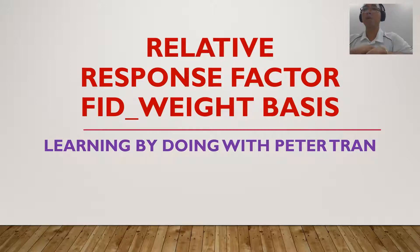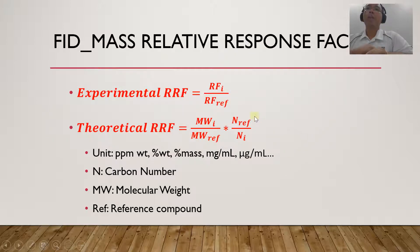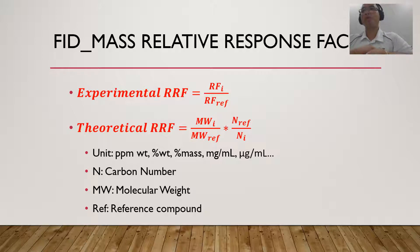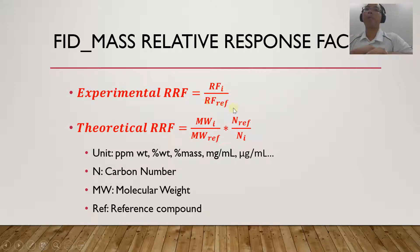Let's get right into the formula. If we define the relative response factor experimentally — that means you run a calibration with a standard that has known concentration — you have the concentration and you have the area counts. You can basically calculate the RF using this formula, which is the response factor of a certain compound divided by the response factor of the reference compound.